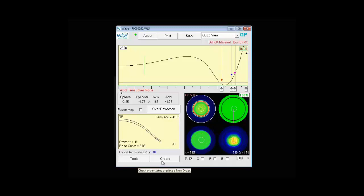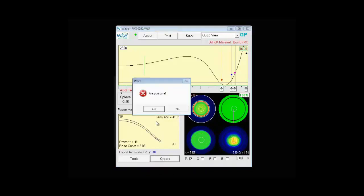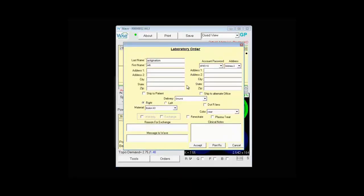The next button is the orders button. This is where you can place an order. When you select it, it will prompt you are you sure you want to order it. If you are, say yes. And first it opens up this laboratory order screen again just as it did with save. The only difference is when you hit accept here, it will actually place the order.